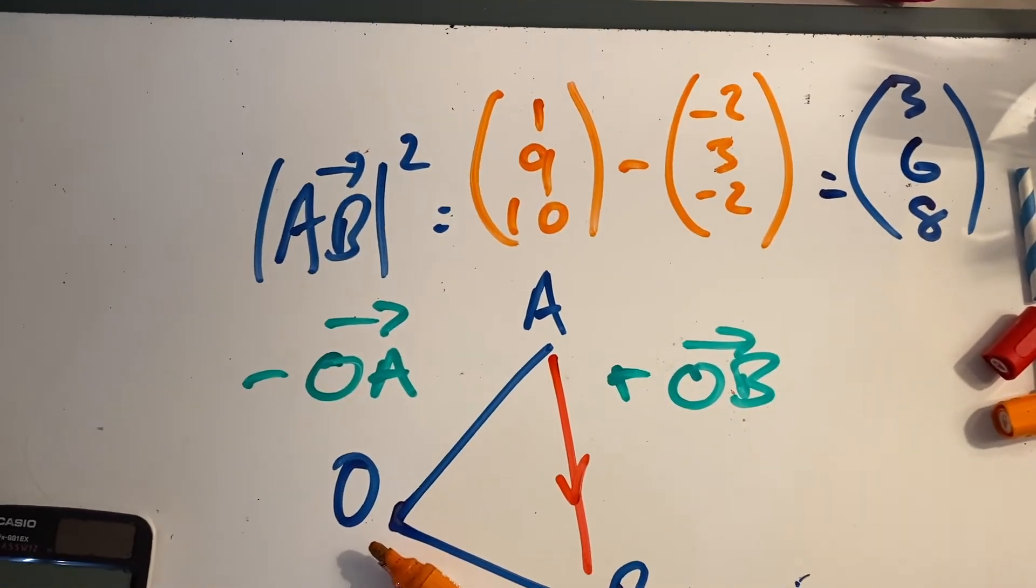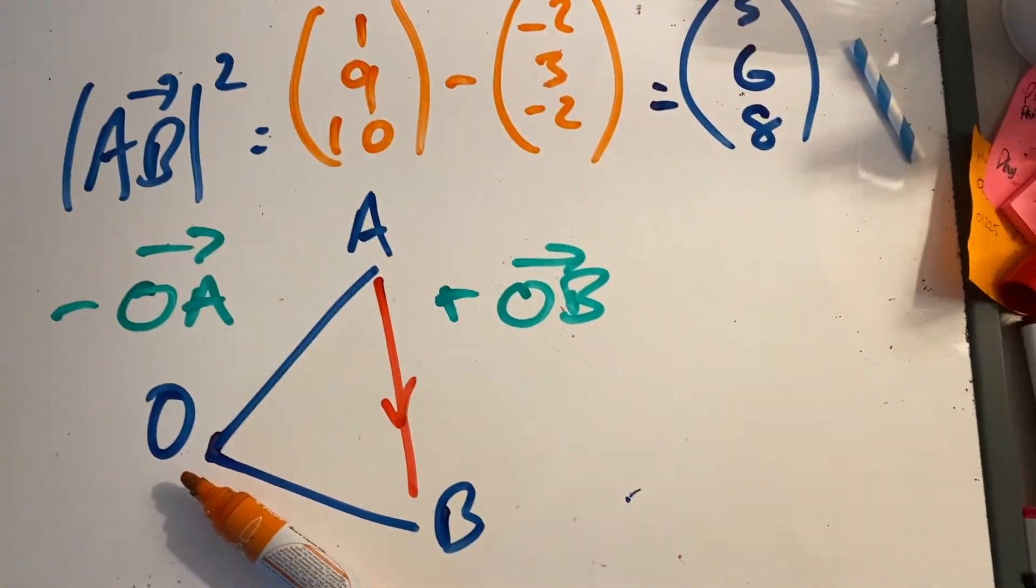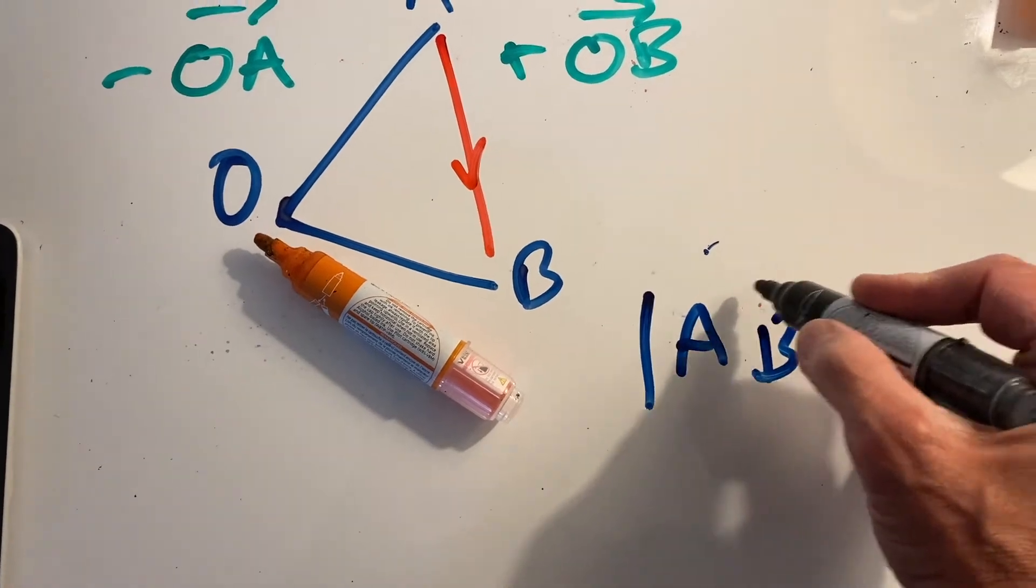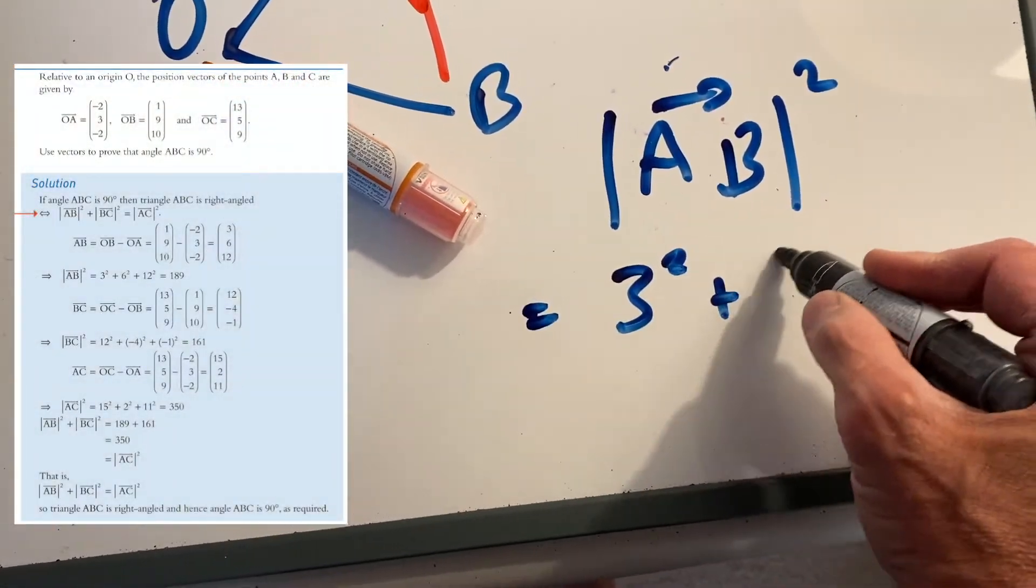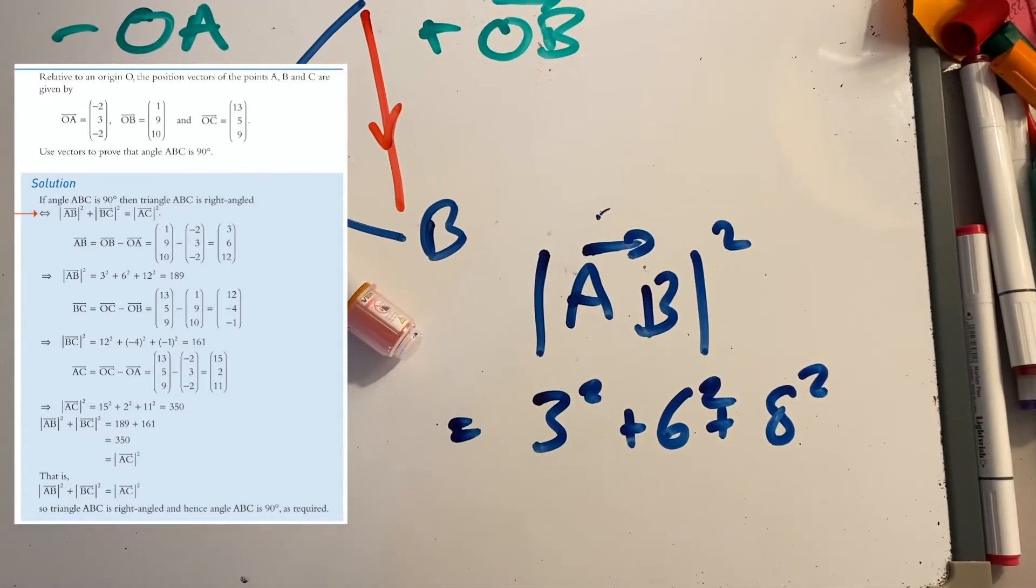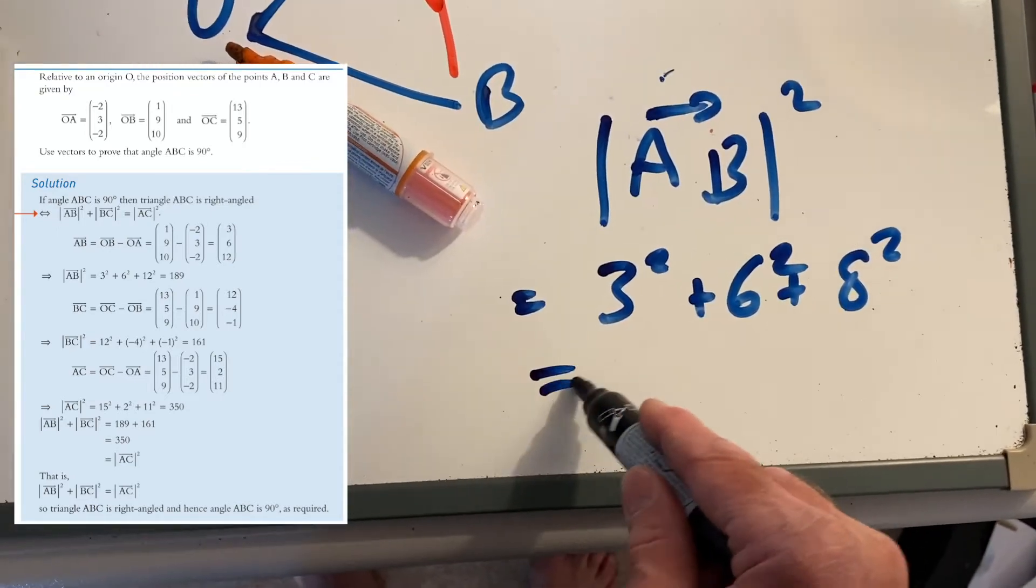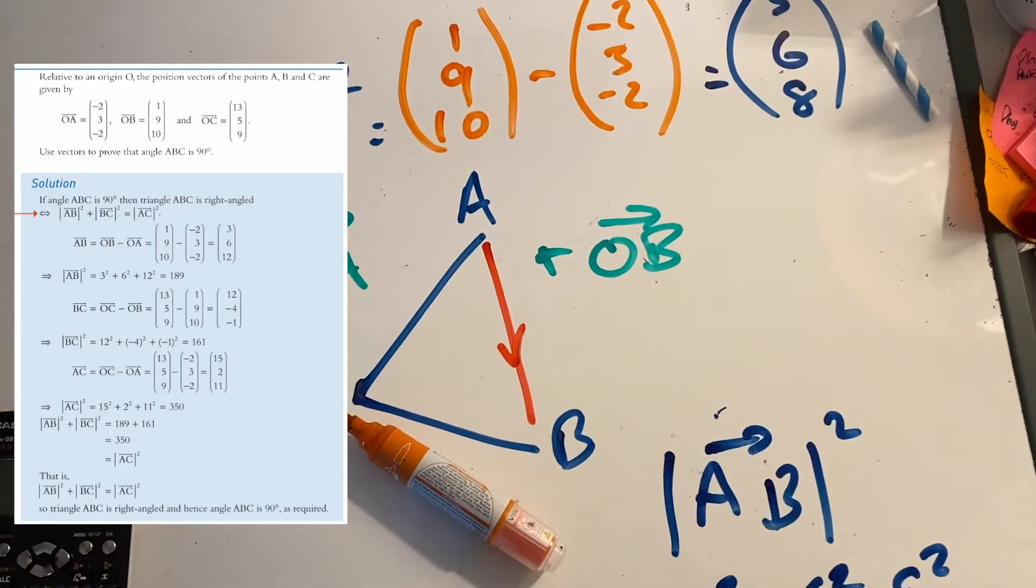Now we need to do the magnitude of that. We looked last time—it's simply going to do Pythagoras again. The magnitude squared is going to be 3² + 6² + 8². So 3² + 6² + 8². If we do all of that, that comes out to 189. That's our AB squared.